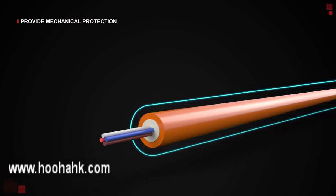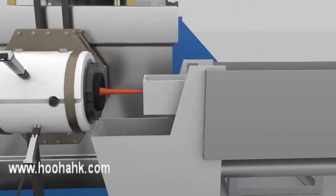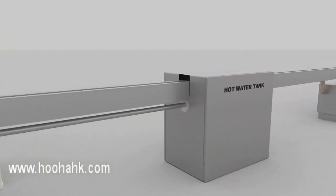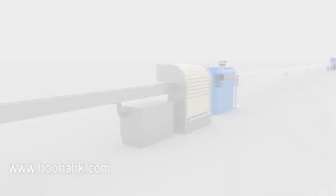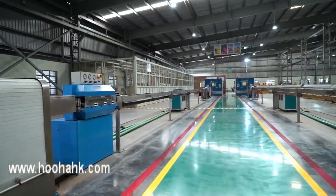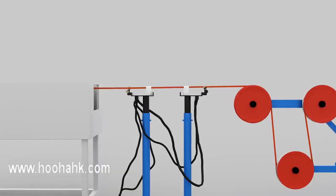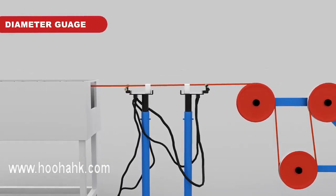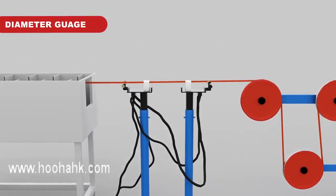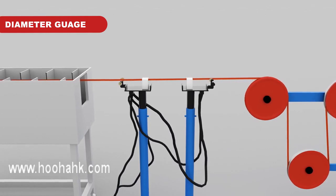After extrusion, the loose tube runs through hot and cold water respectively. In the final stage of the process, the tube gets shrunk and passes through a diameter gauge that controls the diameter of the tube.